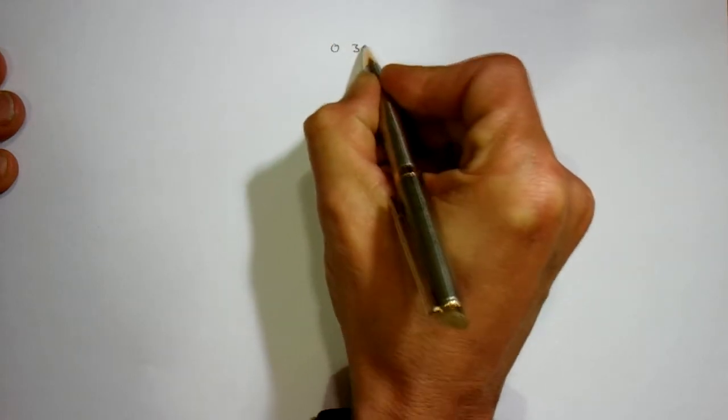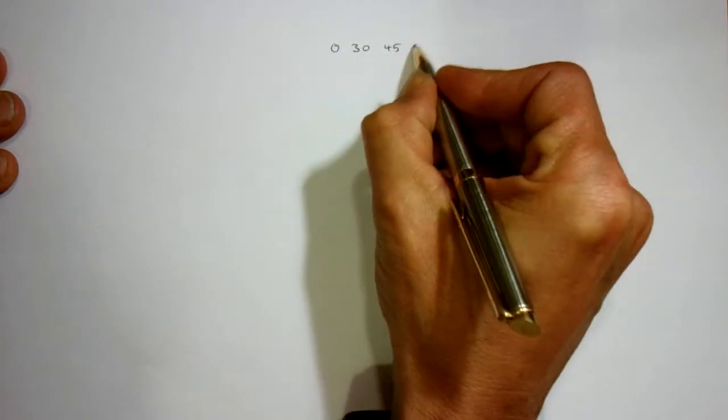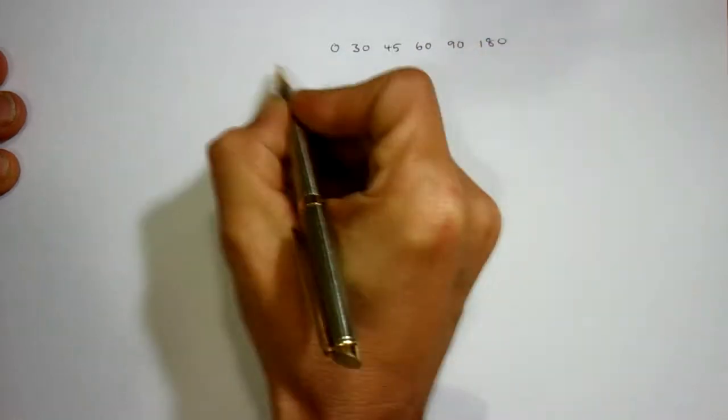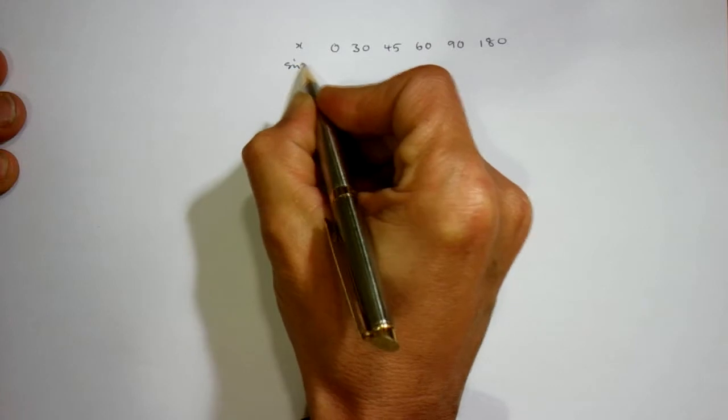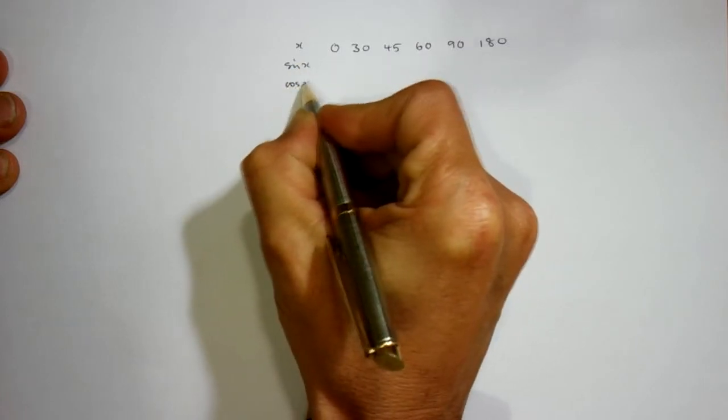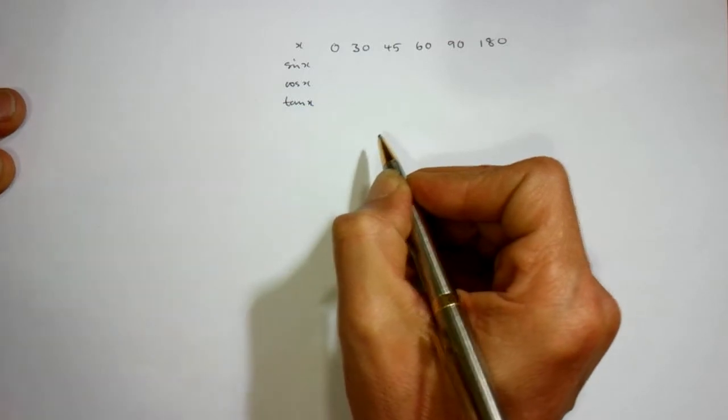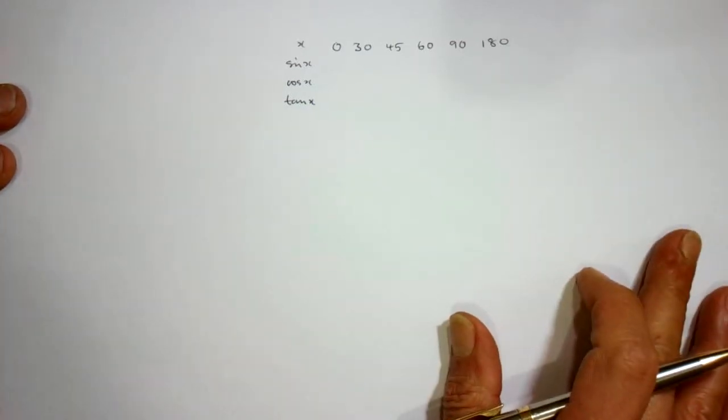We've got 0, 30, 45, 60, 90, and 180. If this is x, we want sin of x, cos of x, and tan of x. And we should be able to write this down and create this table from scratch in about a minute if we know them.